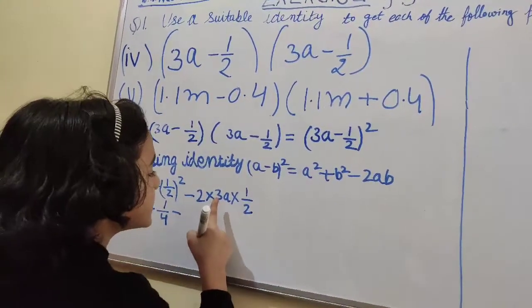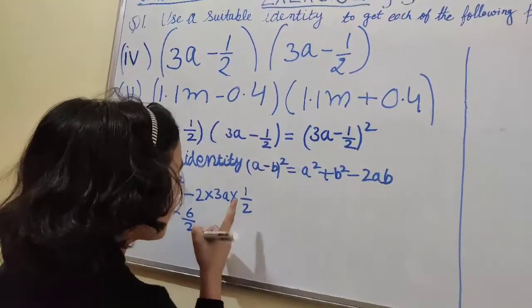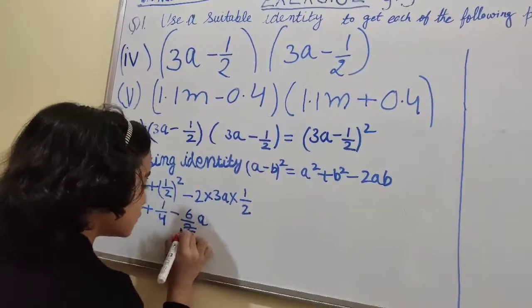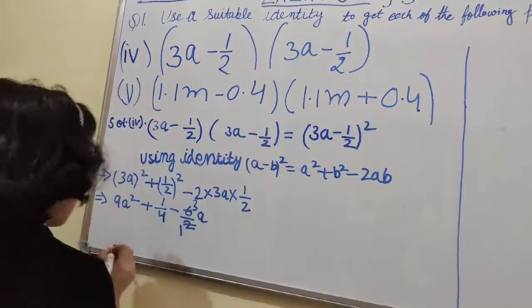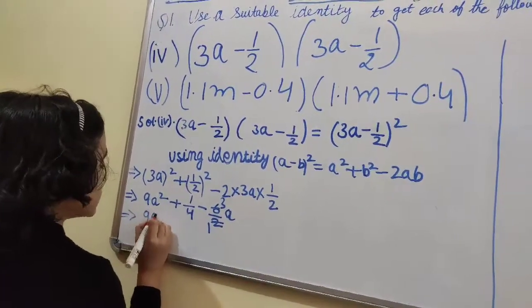Minus 2 times 3a times 1/2. 2 times 3 is 6, 6 times 1 is 6, 6/2 equals 3a.